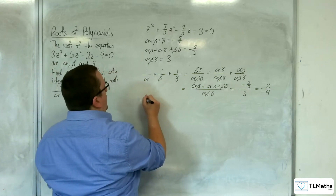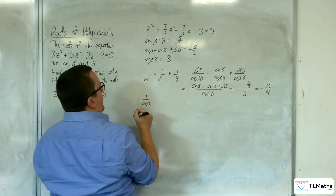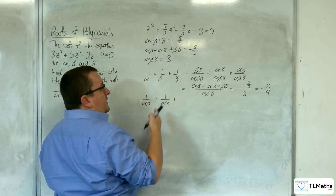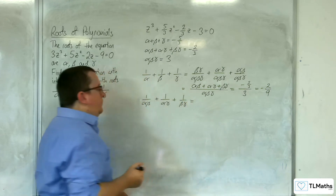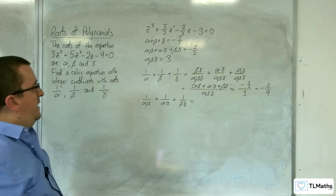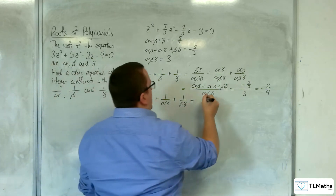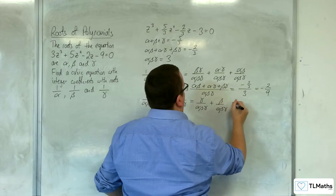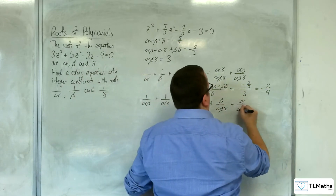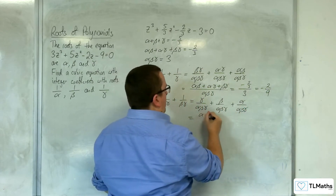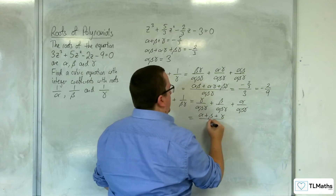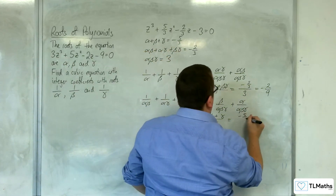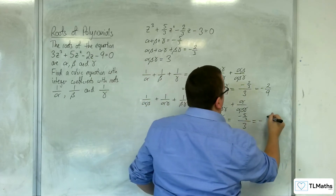Next, we have 1 over alpha beta plus 1 over alpha gamma plus 1 over beta gamma. We give these the same denominator by multiplying top and bottom: gamma over alpha beta gamma, plus beta over alpha beta gamma, plus alpha over alpha beta gamma. So in the numerator we have alpha plus beta plus gamma, and in the denominator alpha beta gamma. Alpha plus beta plus gamma was minus 5 thirds, and alpha beta gamma was 3, so we get minus 5 ninths.